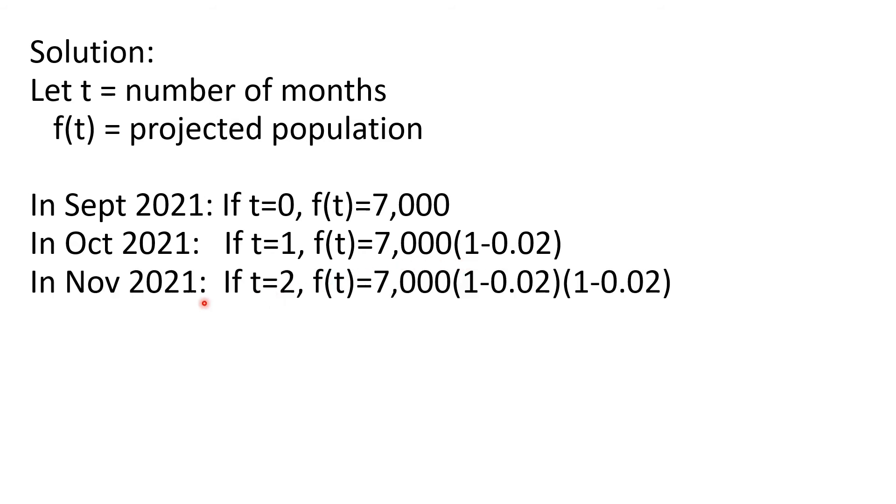In November 2021, when T is equal to 2, F of T will be the projected population in October, multiplied again by the rate of decrease, which is 1 minus 0.02. In December 2021, when T is equal to 3, the projected population is the population in November, multiplied again by 1 minus 0.02.